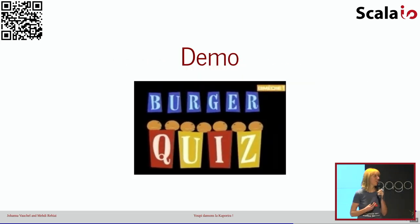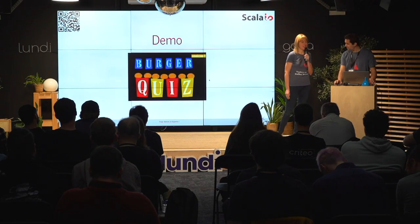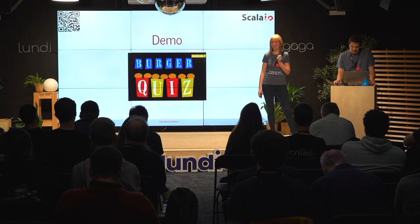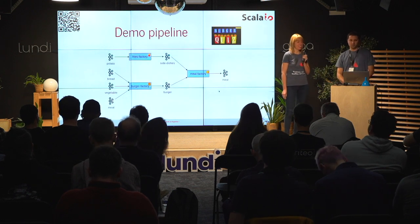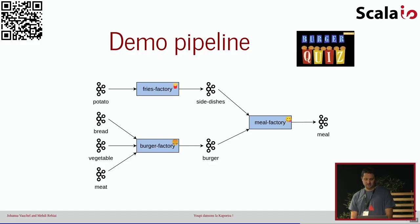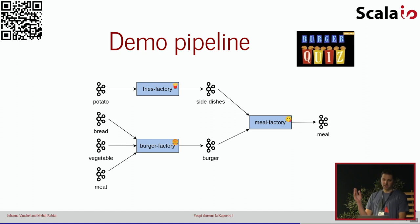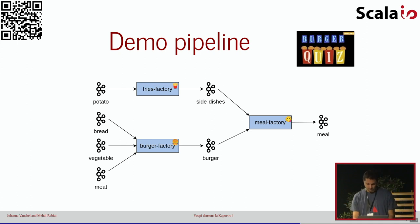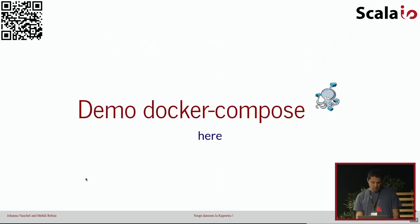Passons maintenant à la démo tant attendue, le Burger Quiz. Pour notre démo, on va utiliser une pipeline un peu plus simple que celle de Lectra. On va imaginer une usine qui va réaliser un menu Burger Frites. Cette usine est composée de trois sous-usines, donc trois Kafka Streams : Fry's Factory, qui a pour but de créer des frites ; Burger Factory, pour créer des hamburgers ; et Mill Factory, qui va assembler les deux. Tout ça va se baser sur un petit Docker Compose. Pour rappel, toutes les ressources sont disponibles sur GitHub — vous pouvez refaire la démo chez vous si vous le souhaitez.